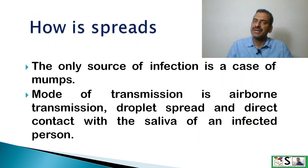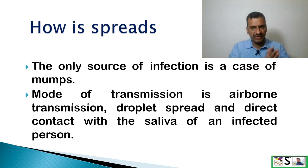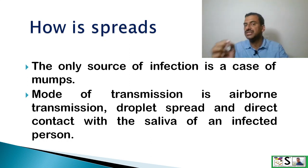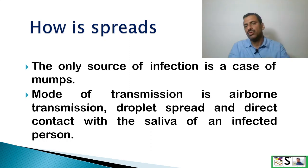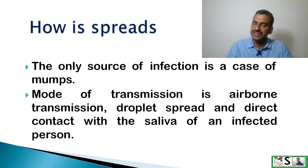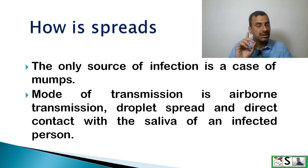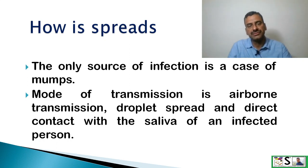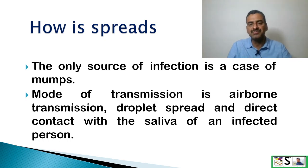How does it spread? The only source of infection is a patient of mumps. And the mode of transmission is airborne, droplet infection, and direct contact with the saliva of an infected person.